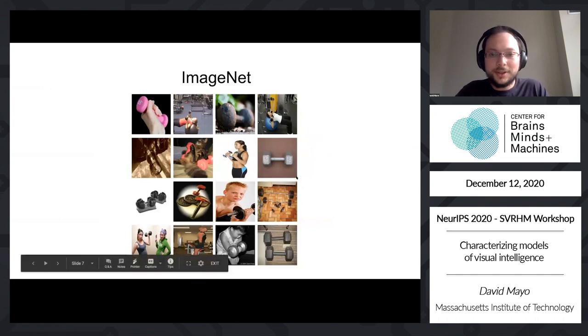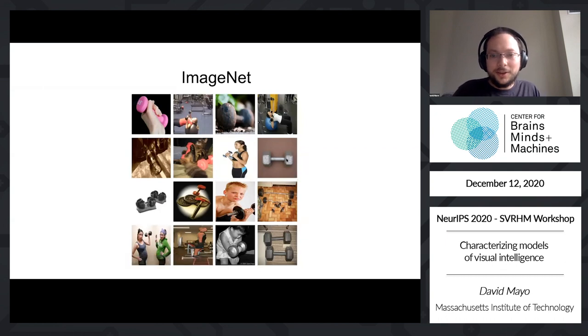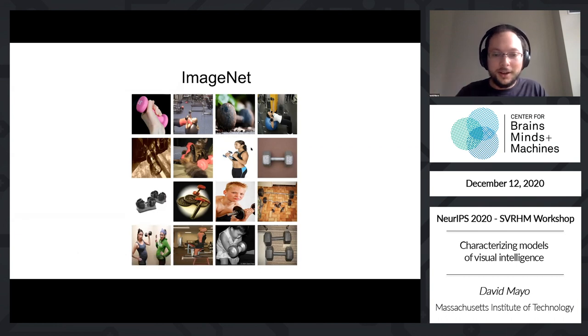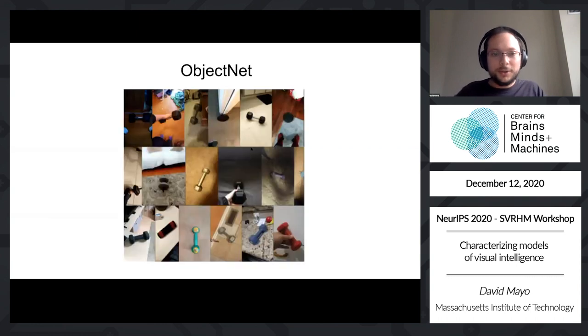This is an example of ImageNet images for a weight, an exercise weight. These weights often occur on sometimes white backgrounds, sometimes in the gym, often correlated with people and how they're being used, usually canonical perspectives and viewpoints taken for artistic purposes. When we control for the rotation of objects, the viewpoint they're imaged from, and the background that they were taken on, it becomes a much more realistic-looking dataset of what weights might look like in your home or in the real world, and it becomes much harder for object recognition models.